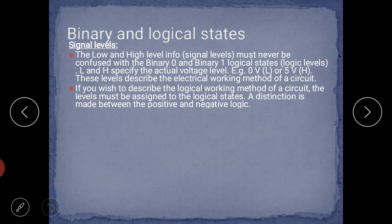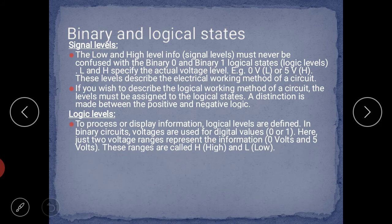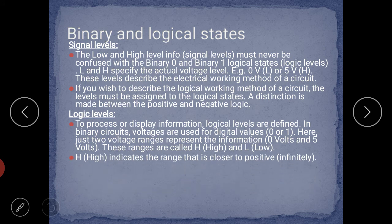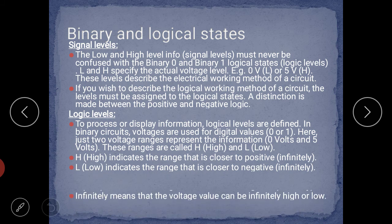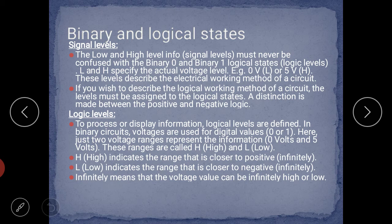If you wish to describe the logical working method of a circuit, the levels must be assigned to the logical states. A distinction is made between positive and negative logic. What is the logic level? To process or display information, logical levels are defined in a binary circuit. Voltages are used for digital values 0 or 1 — just two voltage ranges represent the information: 0 volts and 5 volts. These ranges are called High and Low. High indicates the range closer to positive, and Low indicates the range closer to negative.